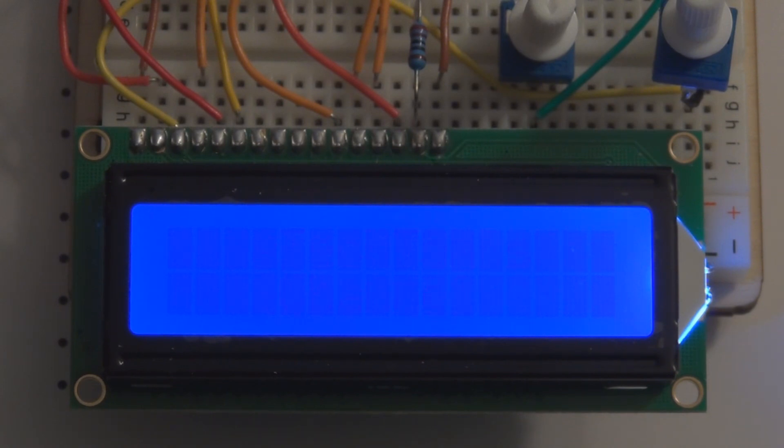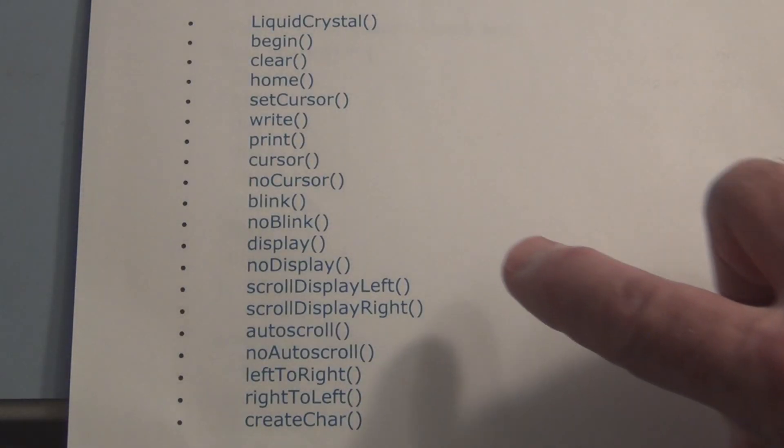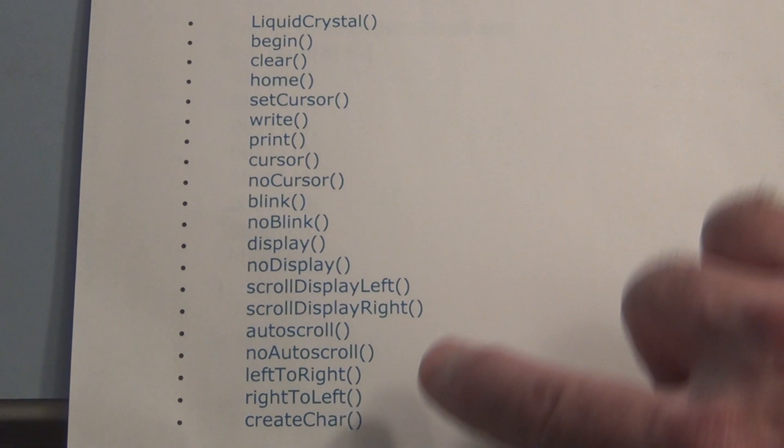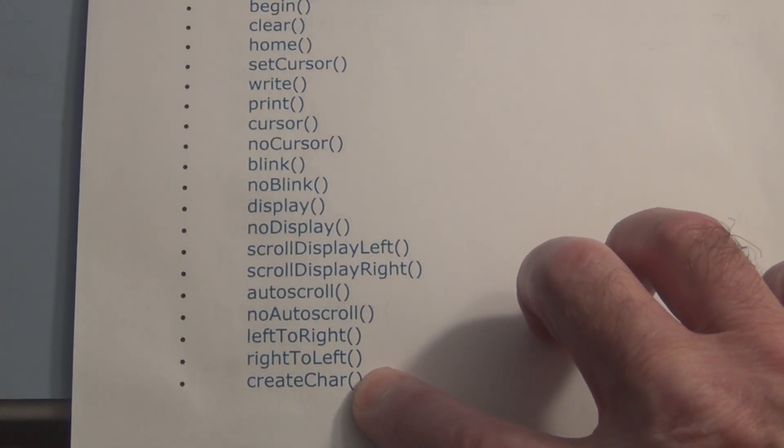In particular there's like 20 functions that you get with the liquid crystal library and I was going through them. This one here is flashing by using the display no display function. So these are the 20 functions you have with the liquid crystal library and in particular I was interested in this create character function here.